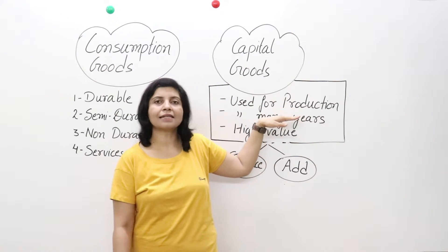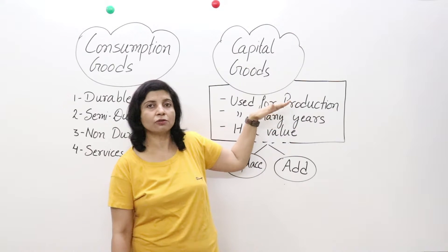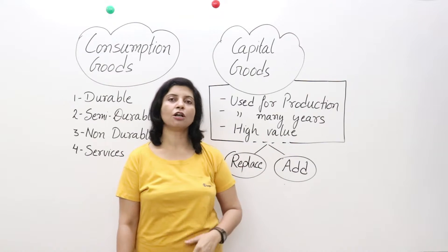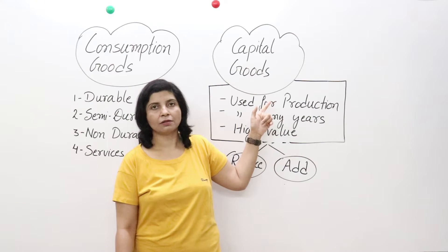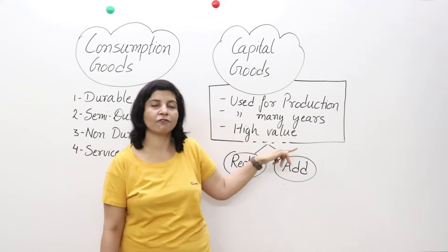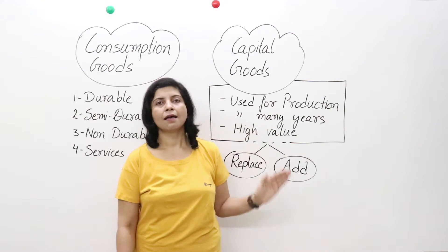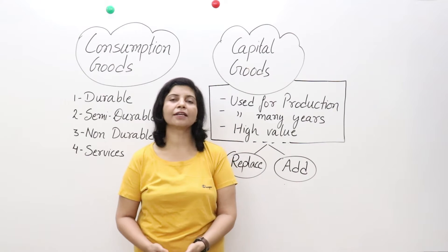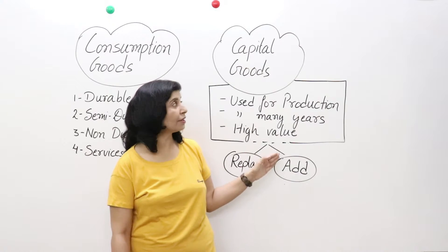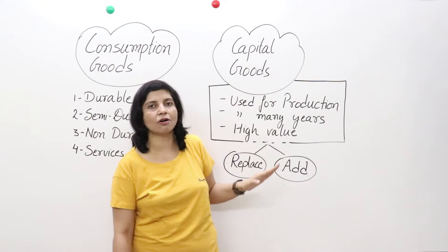Capital goods are durable — they can be used for 10, 20 years or more, just like railway coaches and engines which last more than 30 to 40 years. They are also of high value, as you have to invest a lot of money to buy them. For example, nuts and bolts are used in machines and last many years, but they are not of high value, so they are not capital goods.